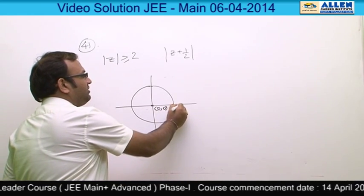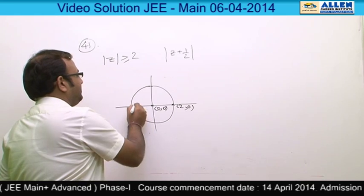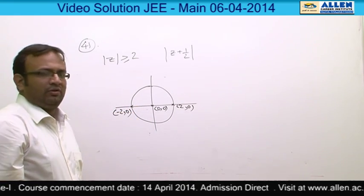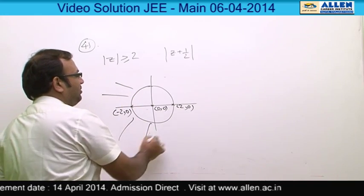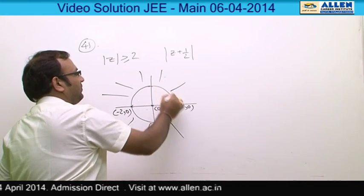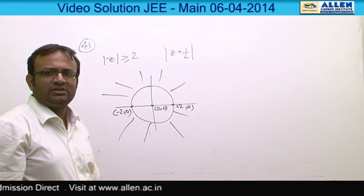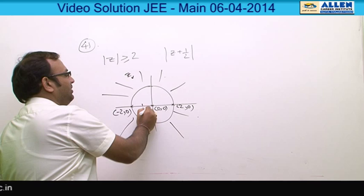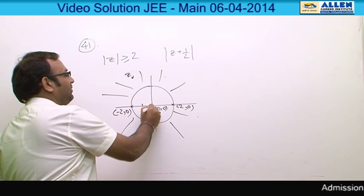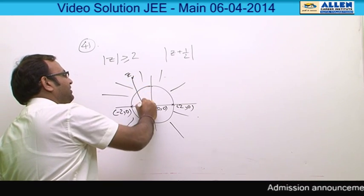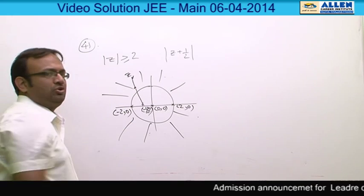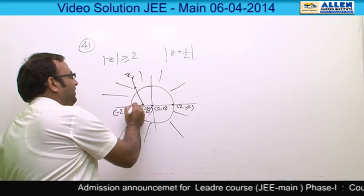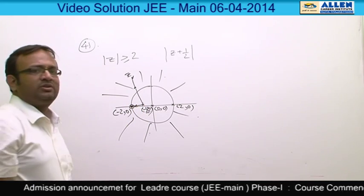This point is (2, 0) and this is (-2, 0). The locus is basically the exterior of the circle and we have to find |z + 1/2|. If z is some point in the locus and this is (-1/2, 0), then |z + 1/2| is this distance. To minimize this distance, the minimum will occur when z arrives at the point (-2, 0).